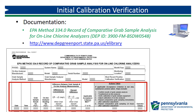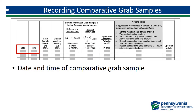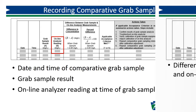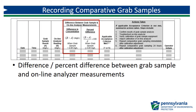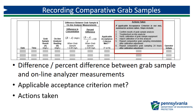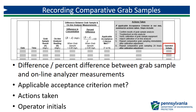Now let's look at the bottom of the form, which is where you will record your comparison analysis. Record the date and time of comparative grab sampling, the grab sample result, and the online analyzer reading at the time the grab sample was collected. Next, record the calculated result for the difference between the grab sample and online analyzer measurements, a yes or no to indicate if the applicable acceptance criterion was met, any actions taken in the event the applicable criterion was not met, and the initials of the operator who conducted the comparative sampling.